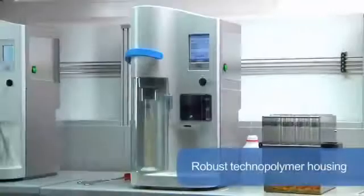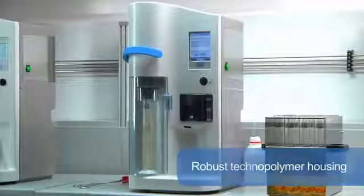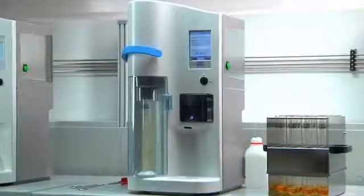The UDK 159 has been designed with a robust technopolymer housing for unprecedented resistance and a space-saving footprint. It is equipped with multiple devices to improve safety and convenience of use, including the exclusive safety lever, the protective door, and the service door.